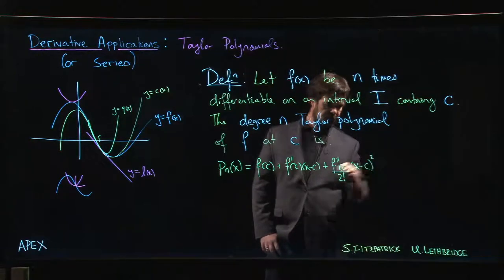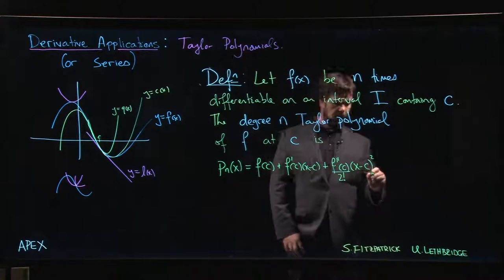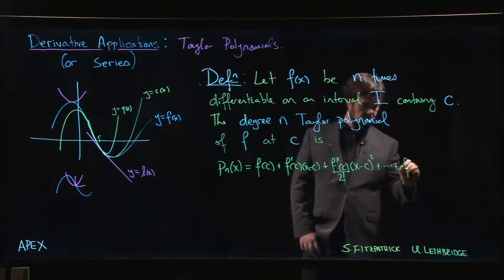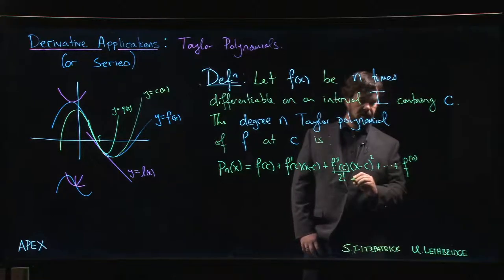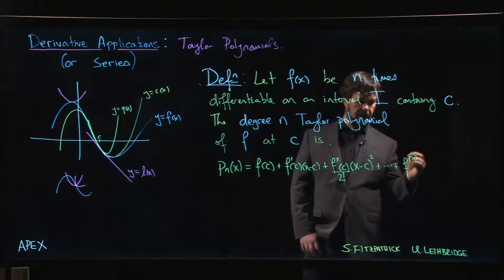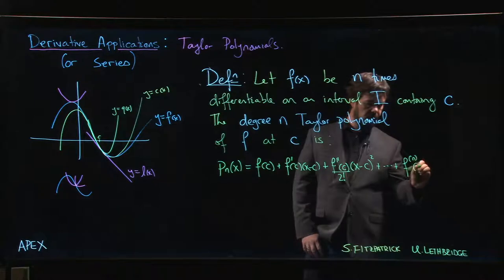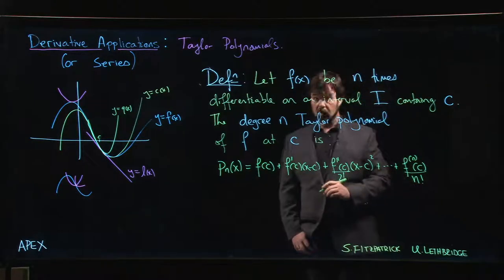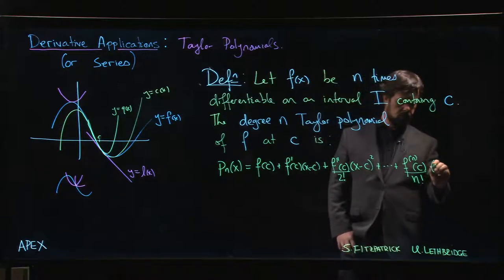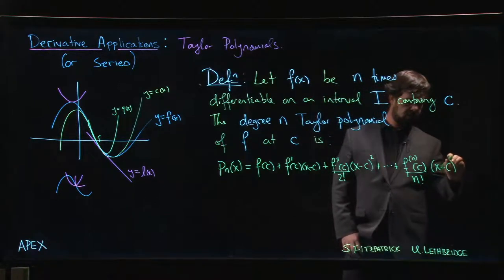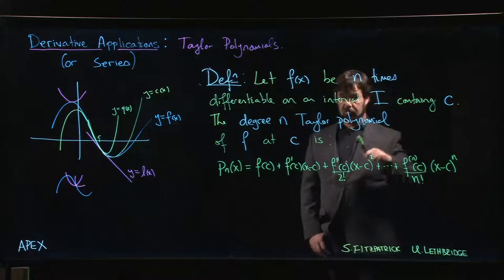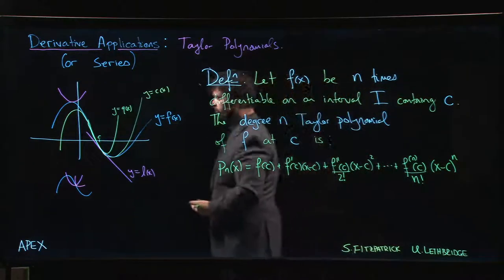We keep going all the way down to a degree n term. We use brackets to indicate derivative, so the n in the bracket means nth derivative. The nth derivative at c divided by n factorial multiplied by (x-c) to the nth power.